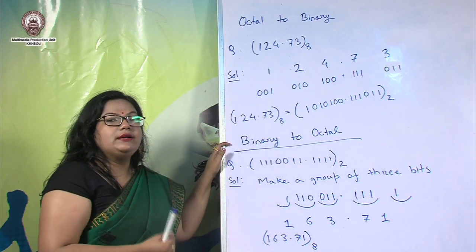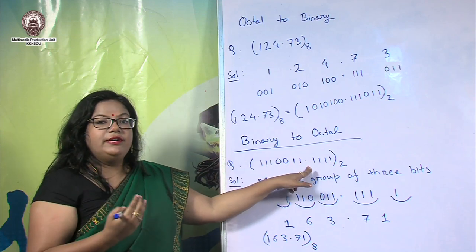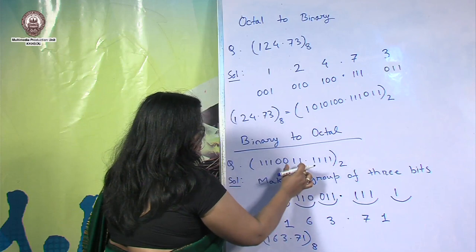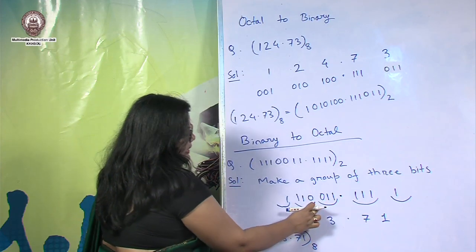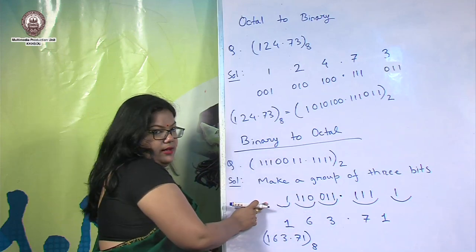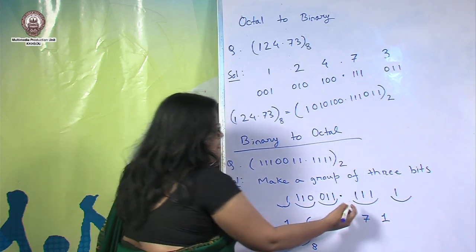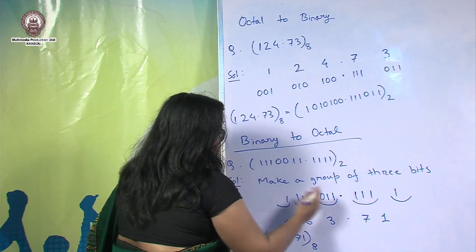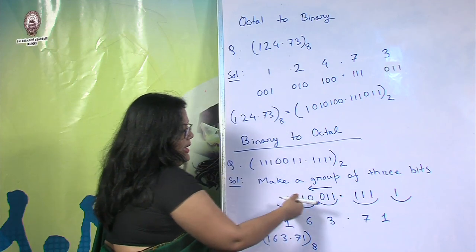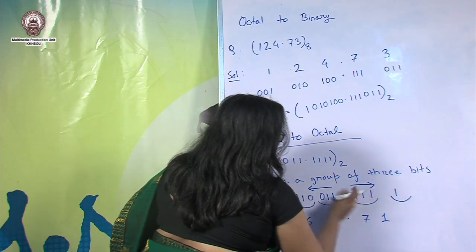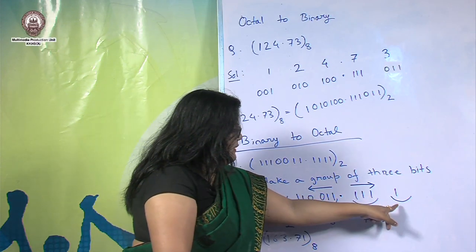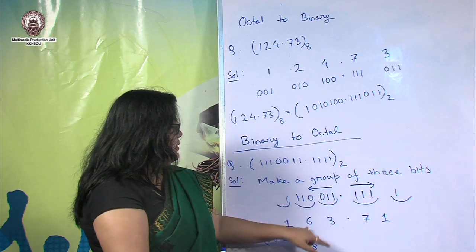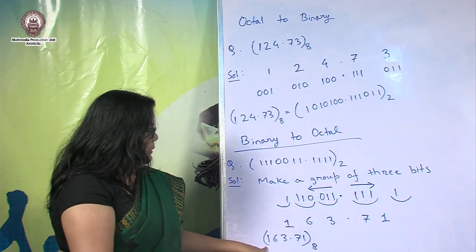For binary to octal conversion, we group the binary digits into sets of 3 bits starting from the decimal point. For the integer part, we group rightward from the point; for the fractional part, we group leftward. Each group is then converted to its octal equivalent. After grouping and converting, we get the octal number 163.71.